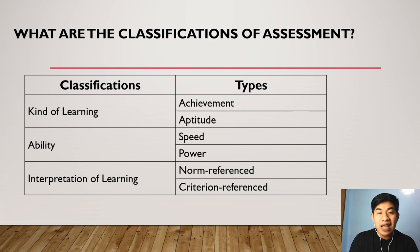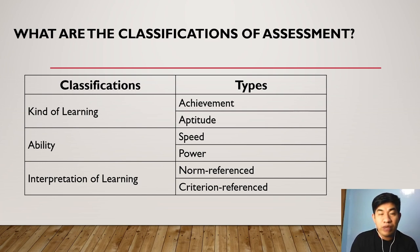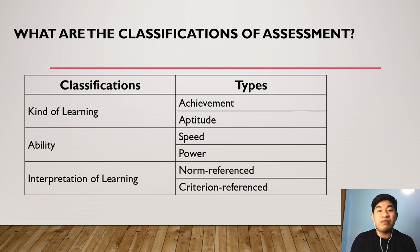Lastly, if we classify assessment according to the interpretation of learning — or how the teacher interprets the results or scores obtained by the students — we have two types: the norm reference test and the criterion reference test. So let's now discuss all the classifications and types of assessment.